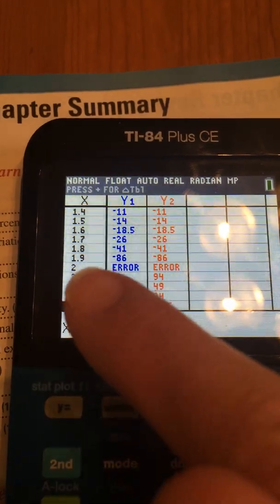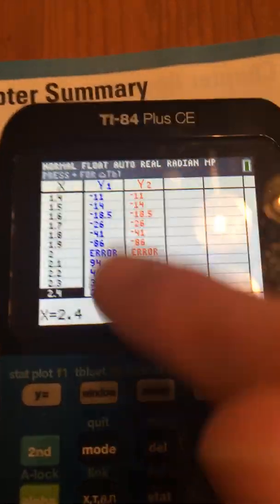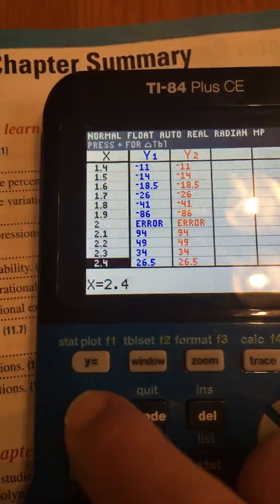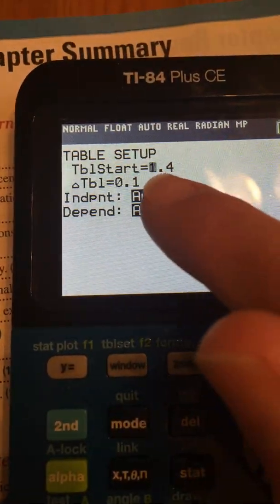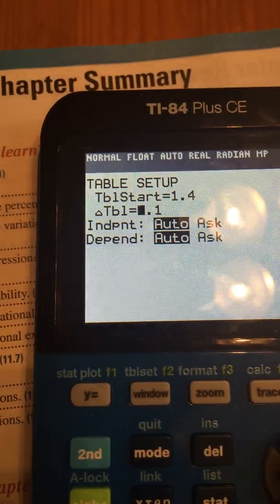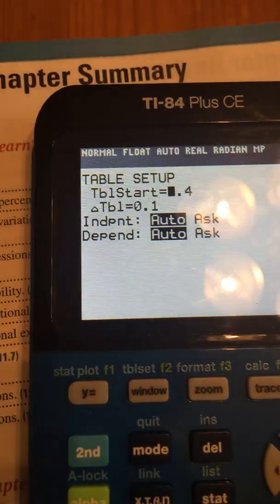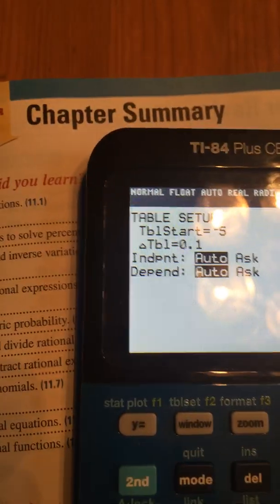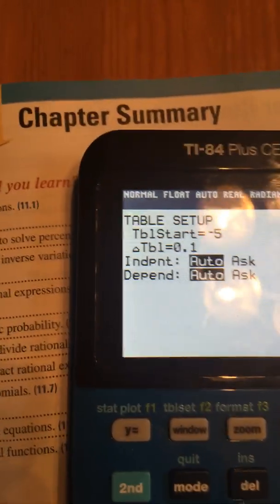See where it says error? That means that x cannot equal 2. Now, I might would change this to a better setting. Do you see where it says table set? Table set. And I think I'm going to go in there, and I'm going to change my table start. I'm going to start it at negative 5. And I'm going to have it change by 1.